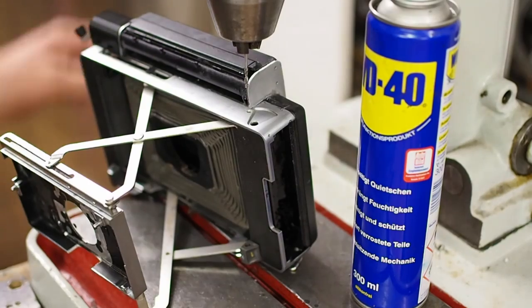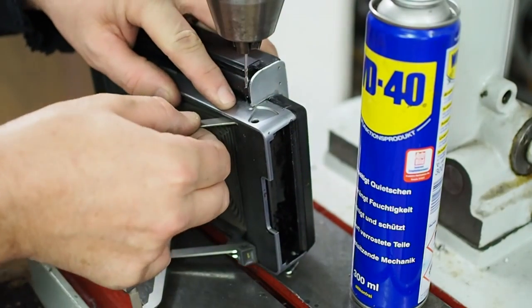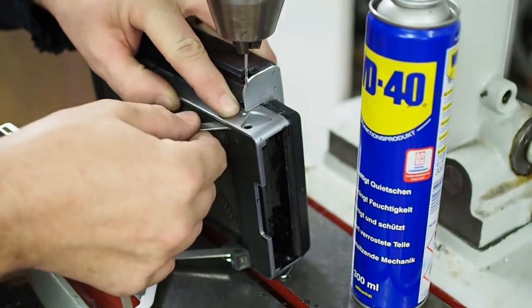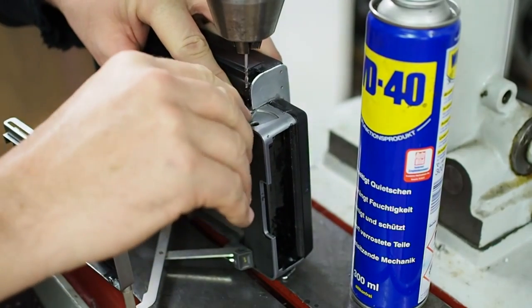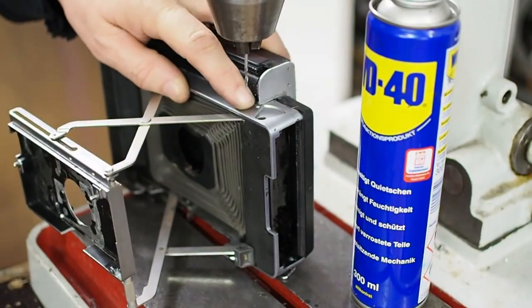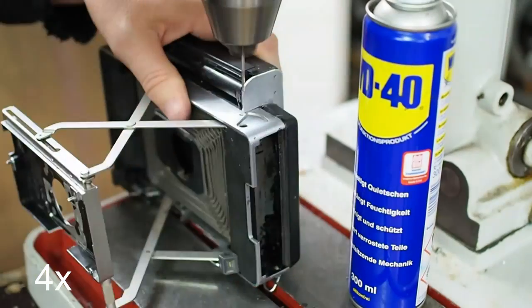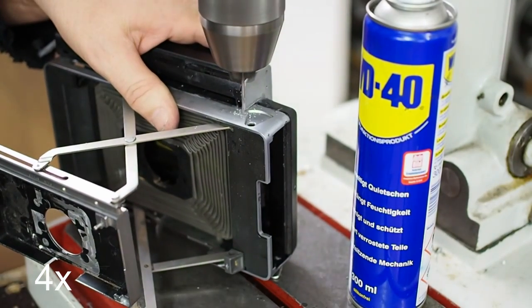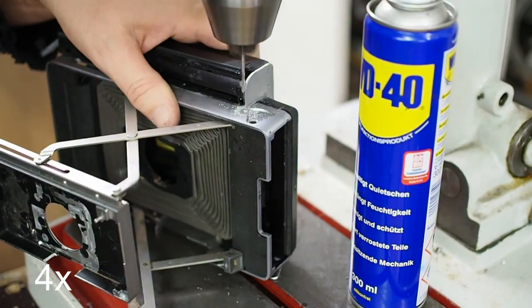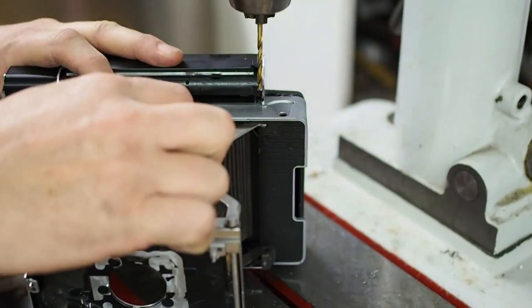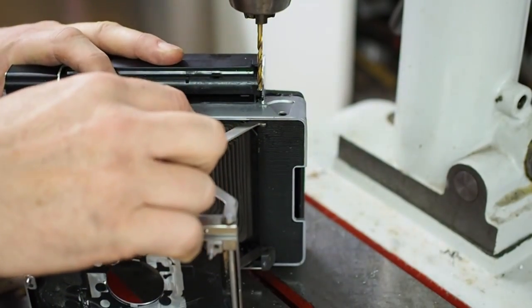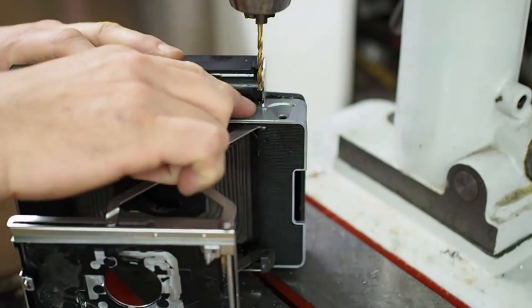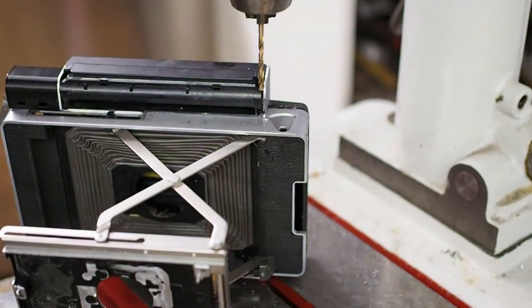In the first video I mentioned that this rivet which this arm pivots on is broken, so I need to drill out the remains of that now and see how I'm going to fix that. The hole in the focus arm is eighth of an inch, so I'll bore this out for eighth of an inch and use a countersunk aircraft rivet as a pivot.